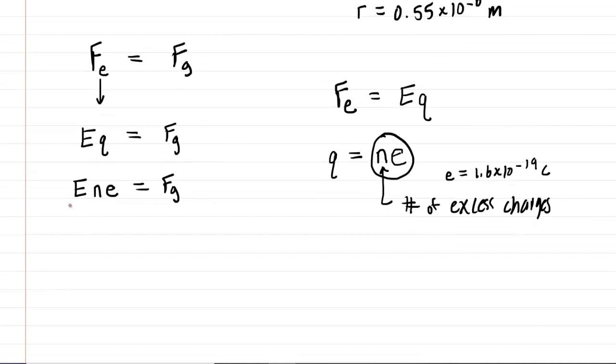So now we can divide both sides of this equation by capital E, little e. So that will leave us with just n, the number of excess charges on this water droplet. And then at that point, all we do is plug in our known values.